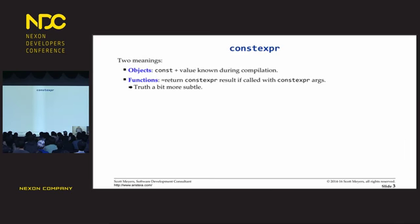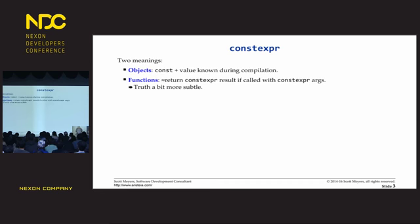I'm going to start with constexpr, which most of you have probably heard of. Constexpr actually has two rather different meanings. The first one is for objects: a constexpr object is const — which is not a surprise — and its value is known during compilation, which turns out to be important. However, constexpr functions have an extremely different meaning. A constexpr function more or less means that if you call it with constexpr arguments, it will give you a constexpr result, though the truth is a little more subtle.